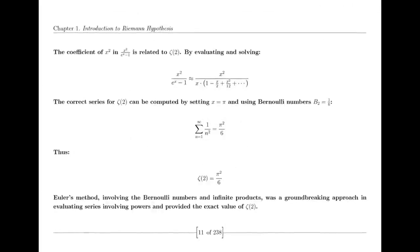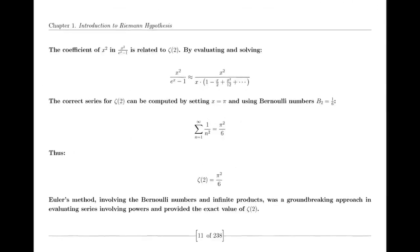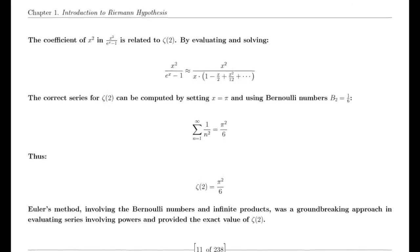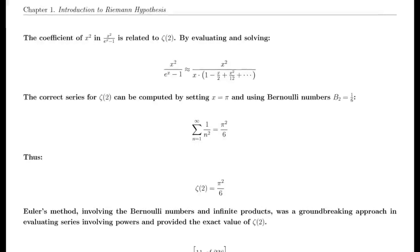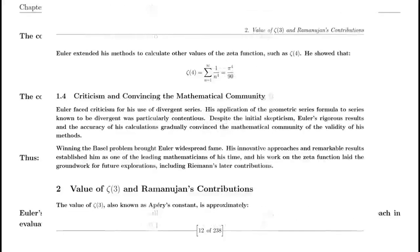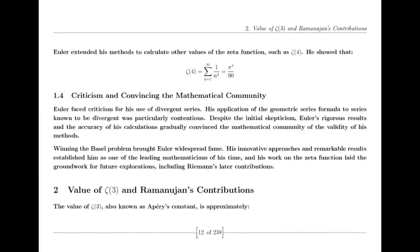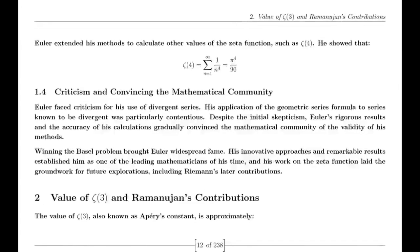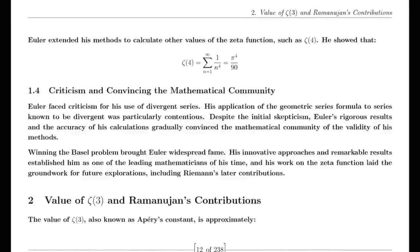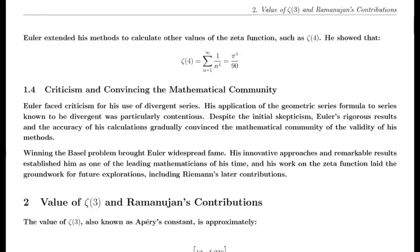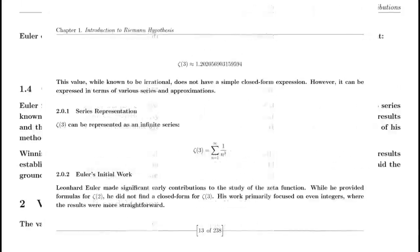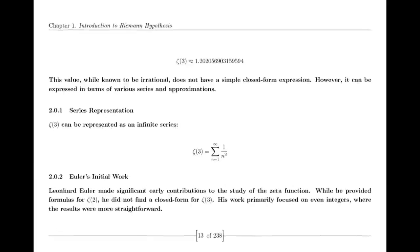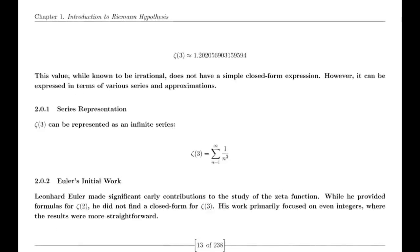In 1859, Riemann published his seminal paper on the distribution of prime numbers, which introduced the zeta function and laid the groundwork for modern analytic number theory. This paper was a milestone in mathematical history and has had a lasting impact on the field, influencing subsequent research and discoveries.